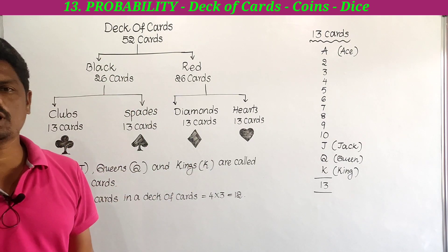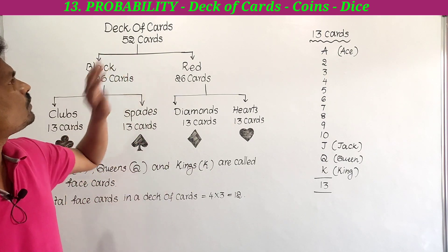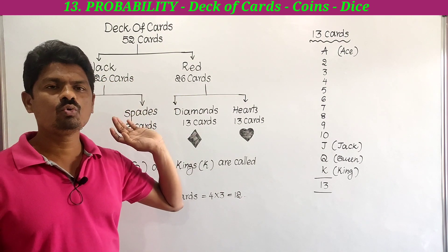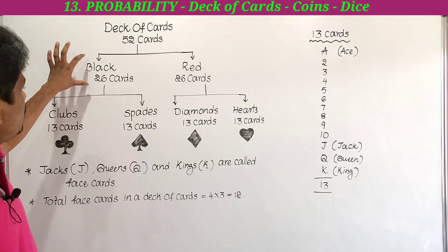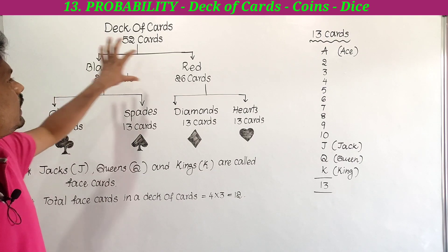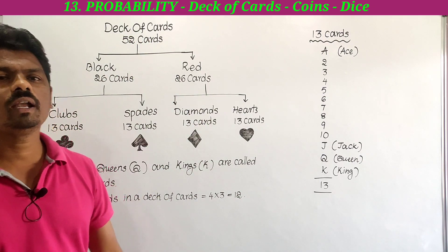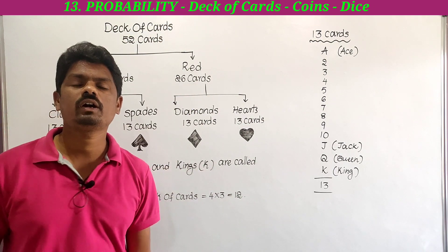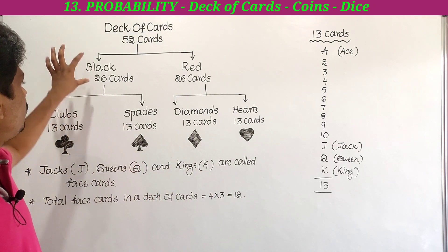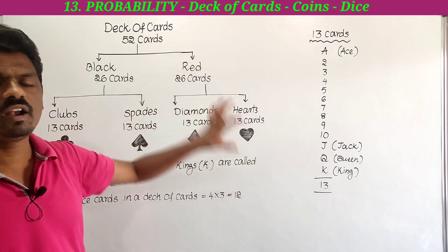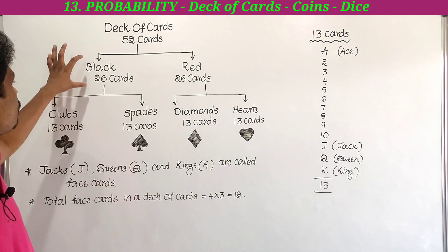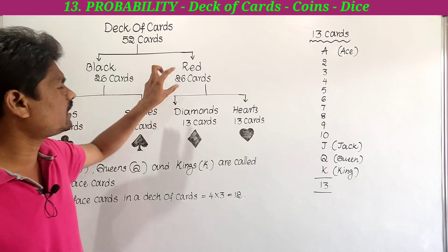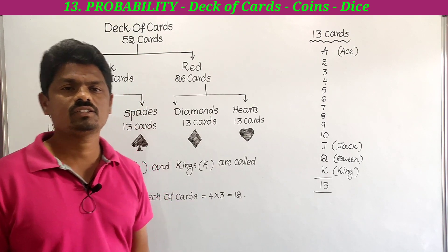These 52 cards have been divided into two groups depending upon their color: black color and red color. Black color cards are 26 and red color cards are 26.